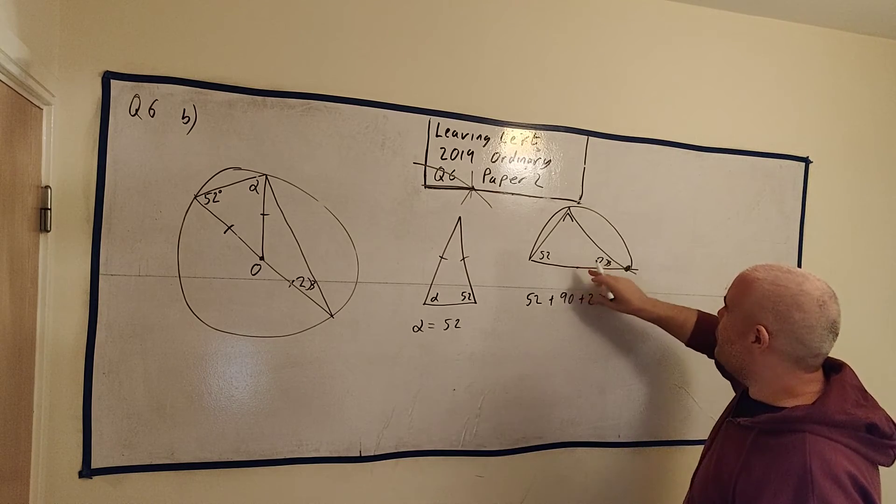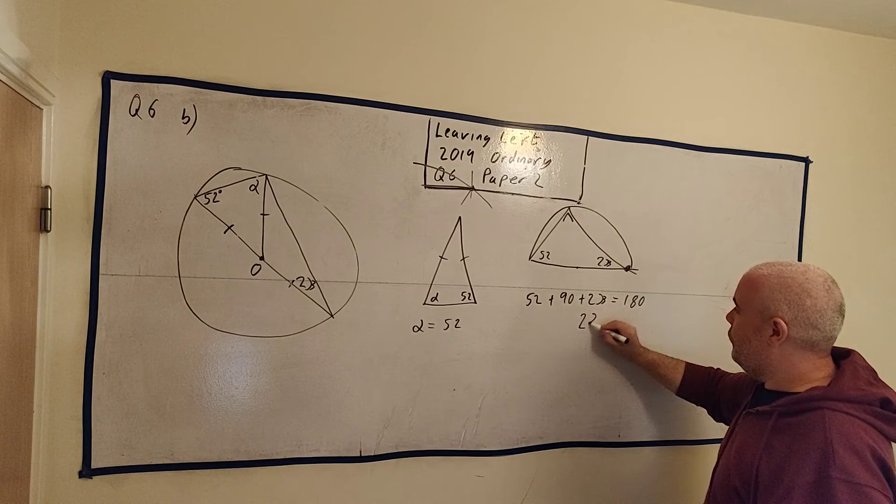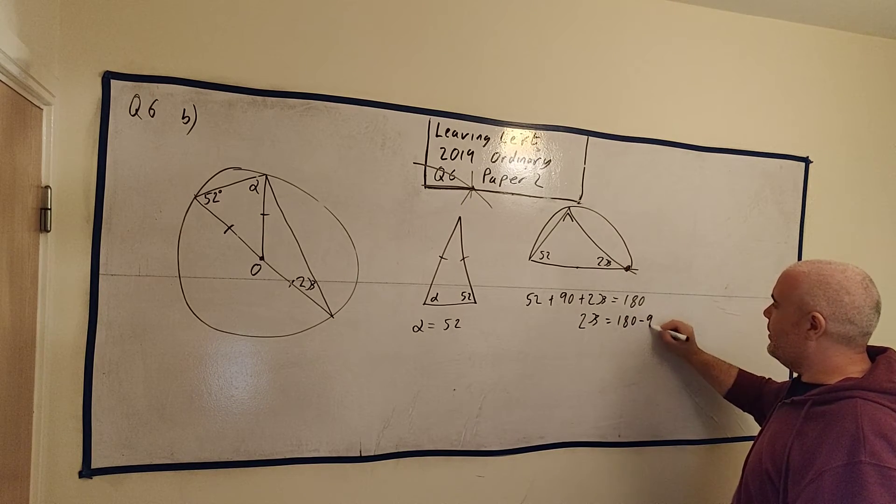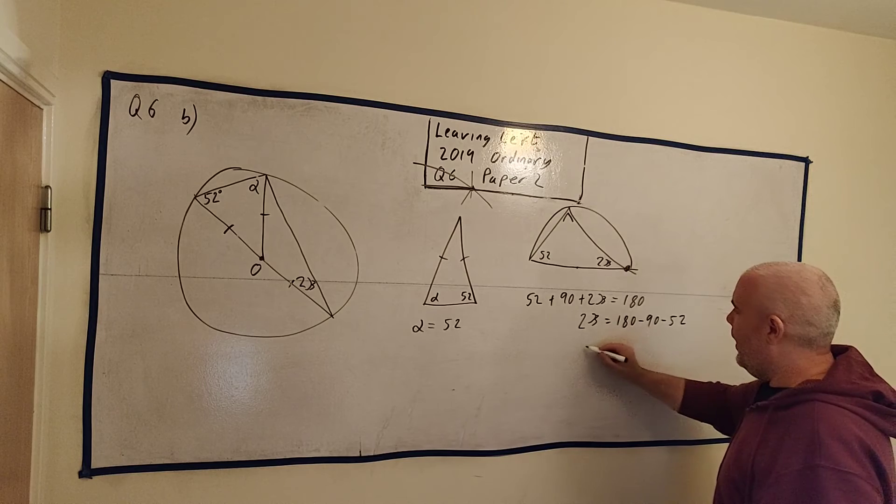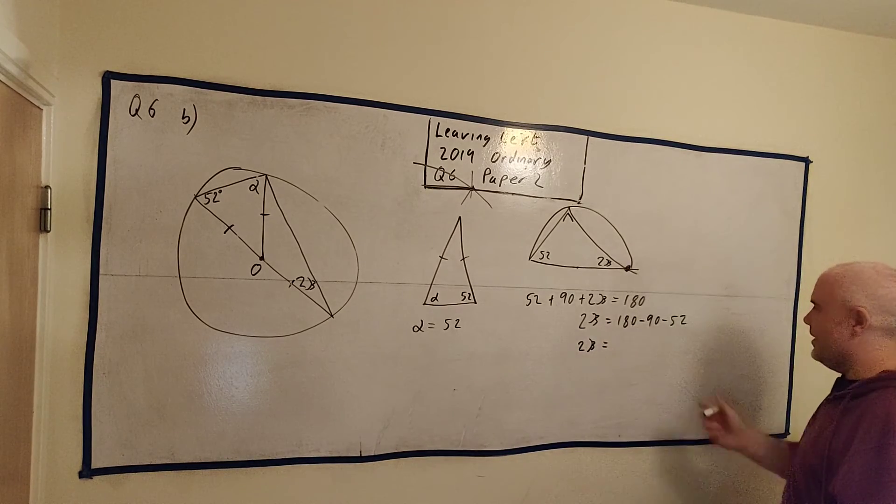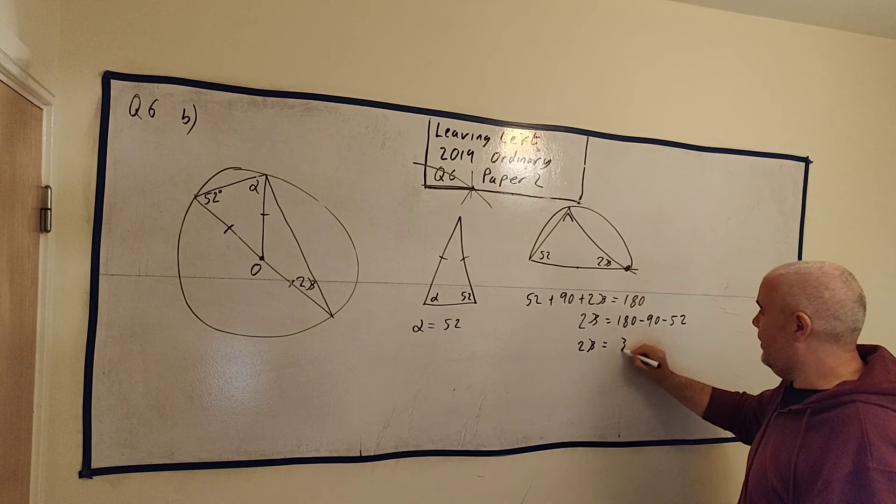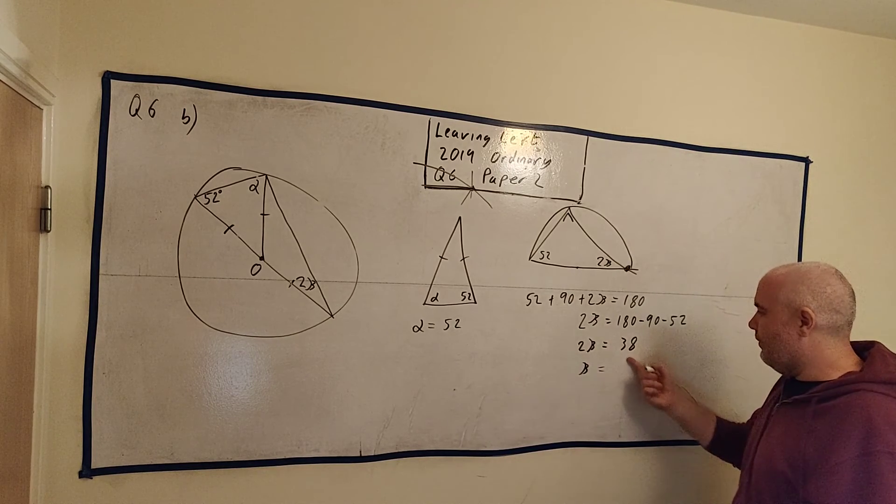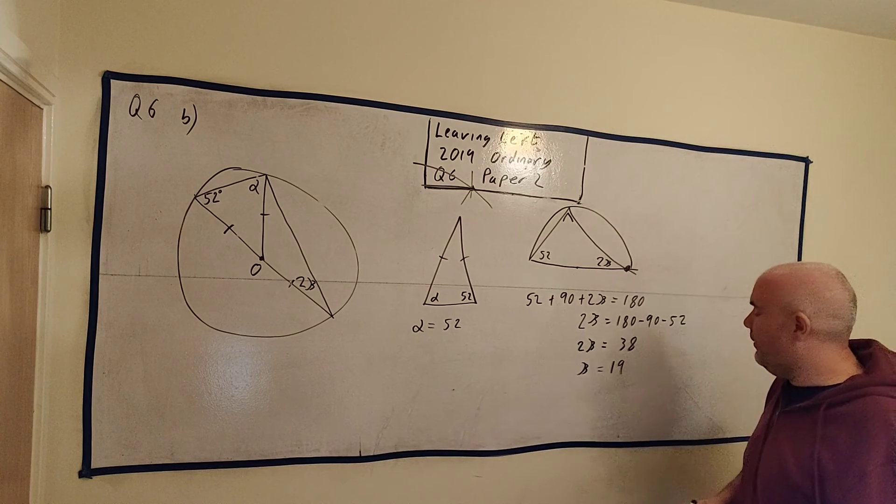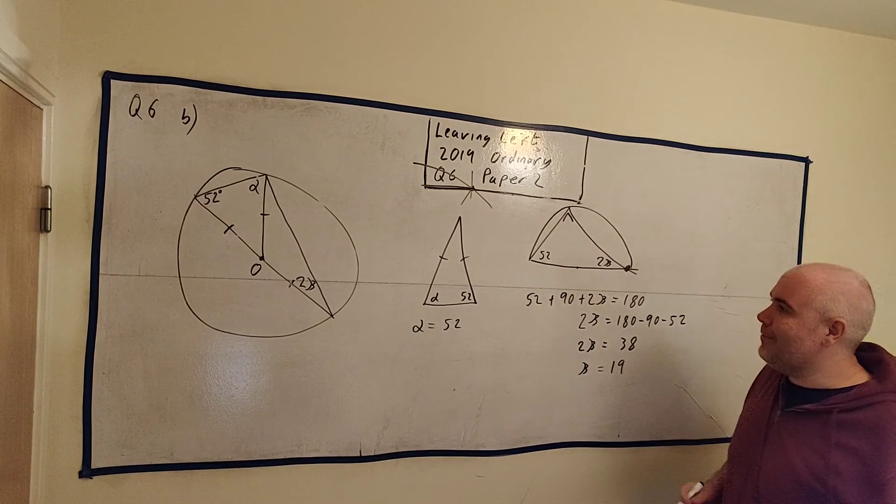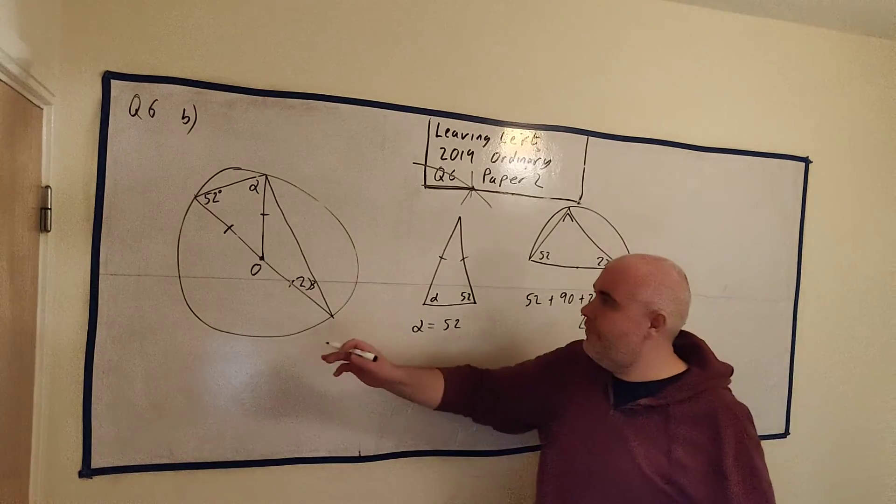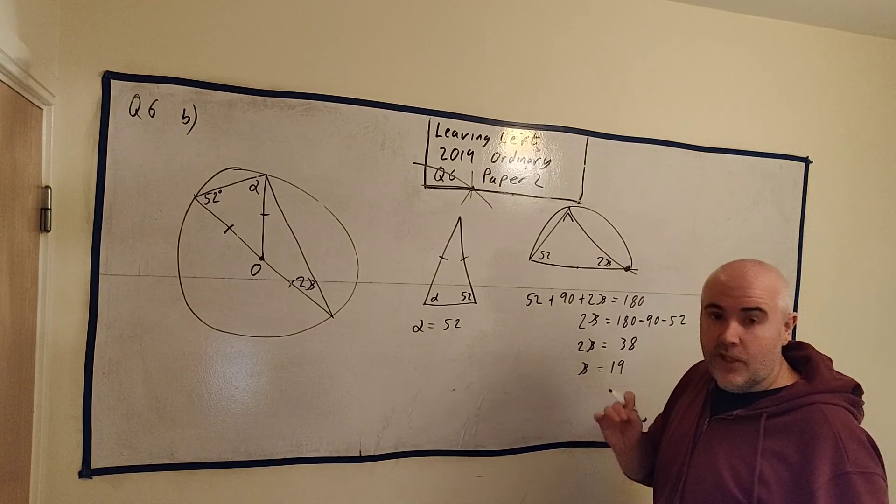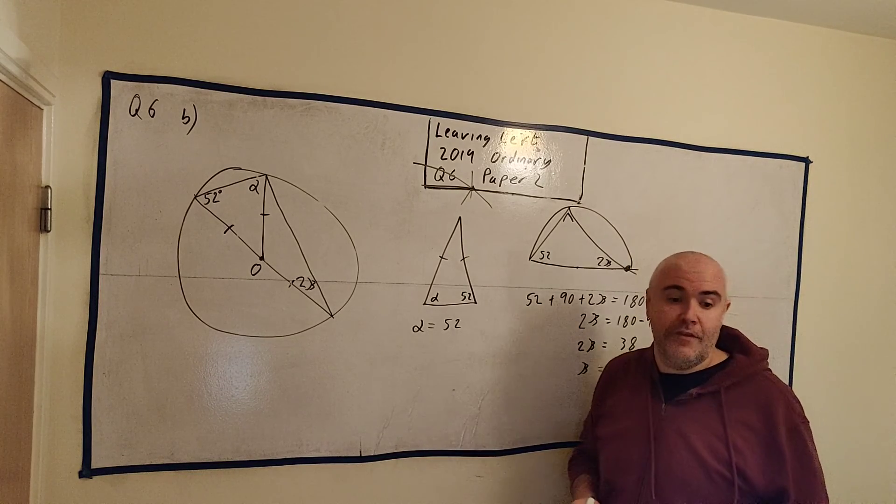Everyone should remember triangles add up to 180 degrees. So 52 plus 90 plus 2 beta equals 180. So what's 2 beta? Well, we just take these two away from 180. 180 minus 90 minus 52. So 2 beta is equal to 38. And that means beta is equal to 19. So that's the answer to part B. Alpha is equal to 52 and beta is equal to 19. The real trick to this question was simply the 90 degrees in the hemisphere of a circle.